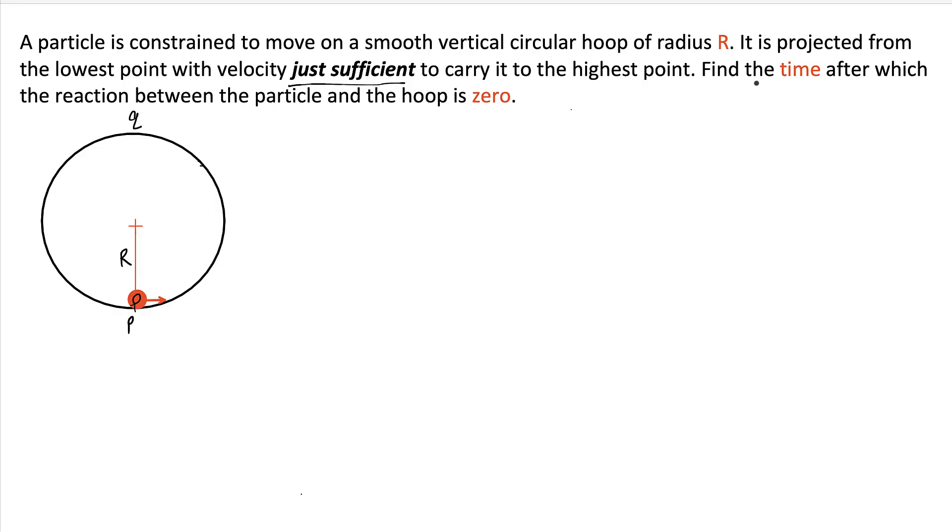Then we need to find the time after which the reaction between the particle and the hoop is zero. The important point to note here is that the reaction can be zero anywhere in between, not necessarily at the highest point. We cannot simply jump to the conclusion and say that at Q the reaction will be zero. The first question is what is V0, if V0 is the velocity with which it is projected and this is going to reach point Q.